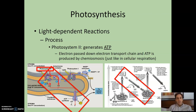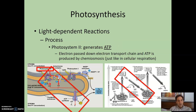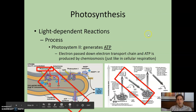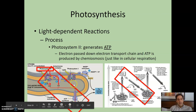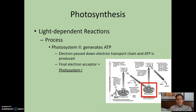Now we use that captured light energy to generate chemical energy. Photosystem 2 generates ATP. An electron is passed down an electron transport chain, and ATP is produced by chemiosmosis — just like in cellular respiration. As the electron is passed, protons are pumped against their gradient into the thylakoid space, then those protons flow back out through ATP synthase. That exergonic movement of protons down their gradient is coupled with the endergonic production of ATP. The final electron acceptor, instead of oxygen as in cellular respiration, is photosystem 1.